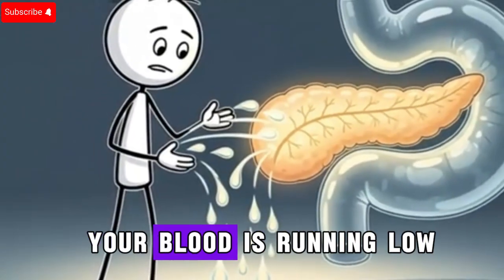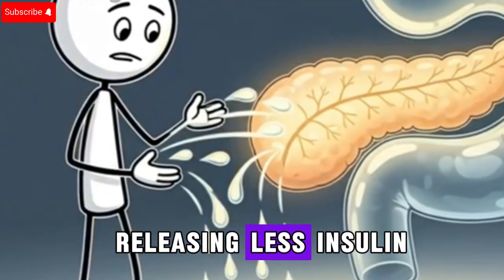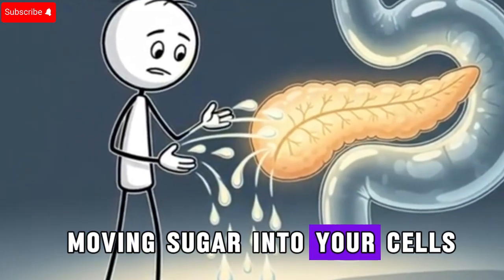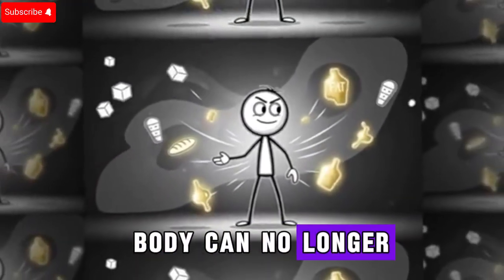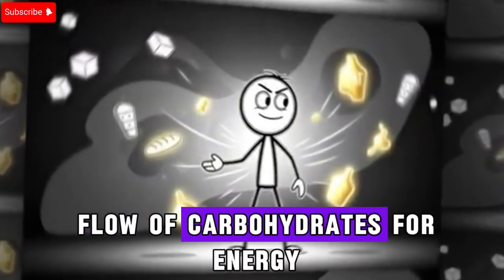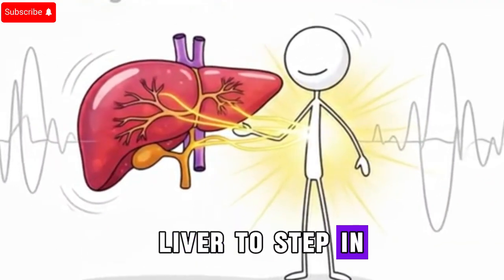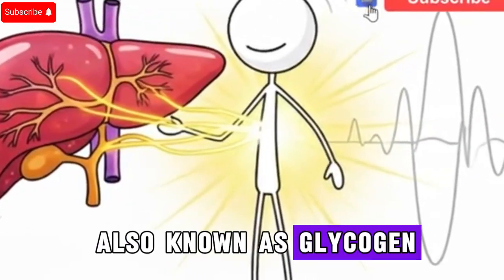Glucose, the sugar in your blood, is running low. The pancreas responds by releasing less insulin, a hormone responsible for moving sugar into your cells. With insulin reduced, your body can no longer rely on a steady flow of carbohydrates for energy. Instead, it signals the liver to step in, releasing stored glycogen reserves.